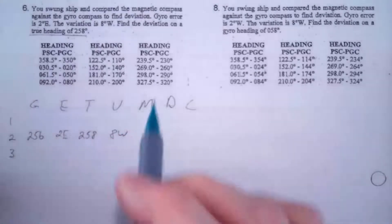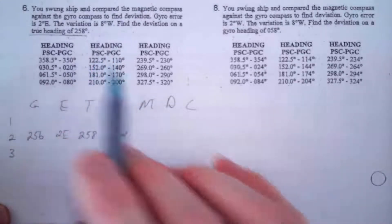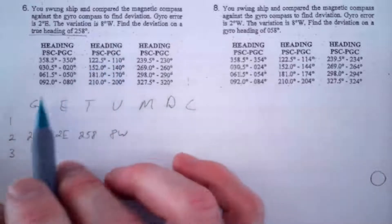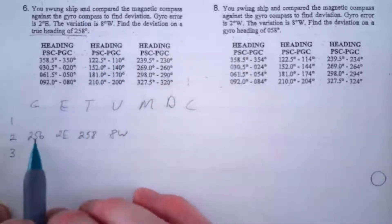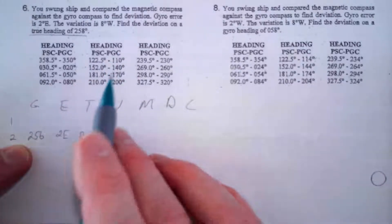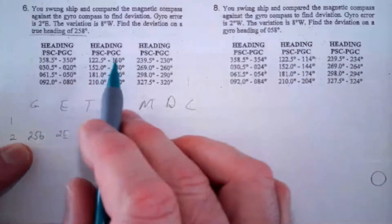So going from true to compass I subtract east, so this becomes 256. Now in the table I've got PSC and PGC. I don't have any true, that's why I converted this to gyro.